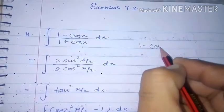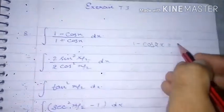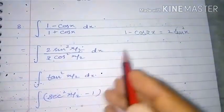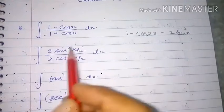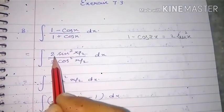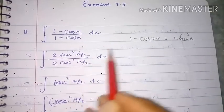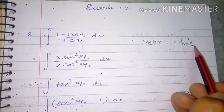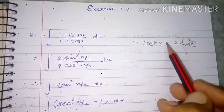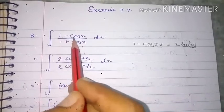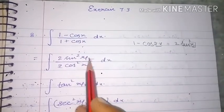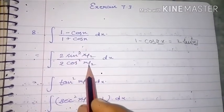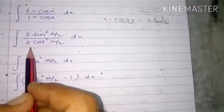The identity is: 1 - cos(2x) = 2sin²x. Using this identity, 1 - cosx can be replaced by 2sin²(x/2), because the angle here is x, so in the identity the angle becomes half, i.e., x/2. Similarly, for 1 + cosx, the formula is 2cos²(x/2), and the 2s cancel out.